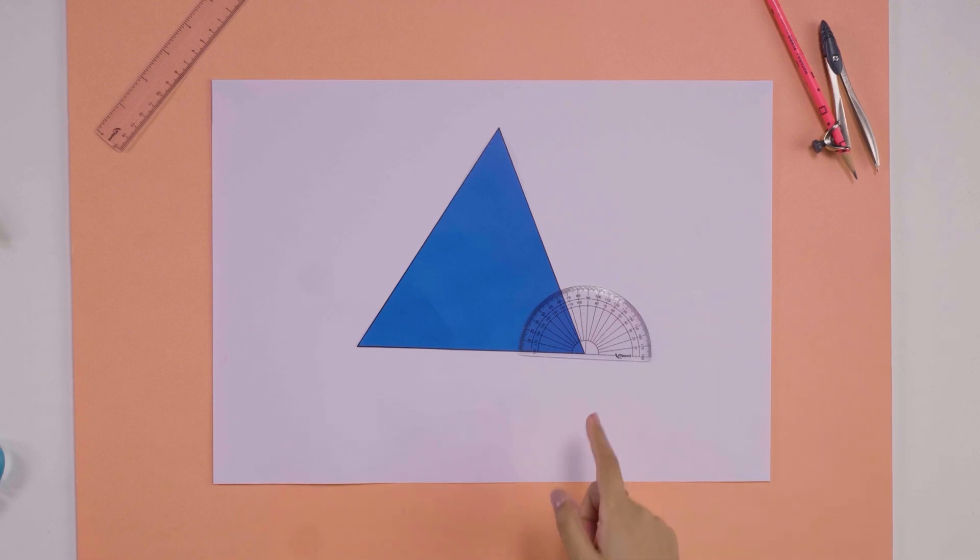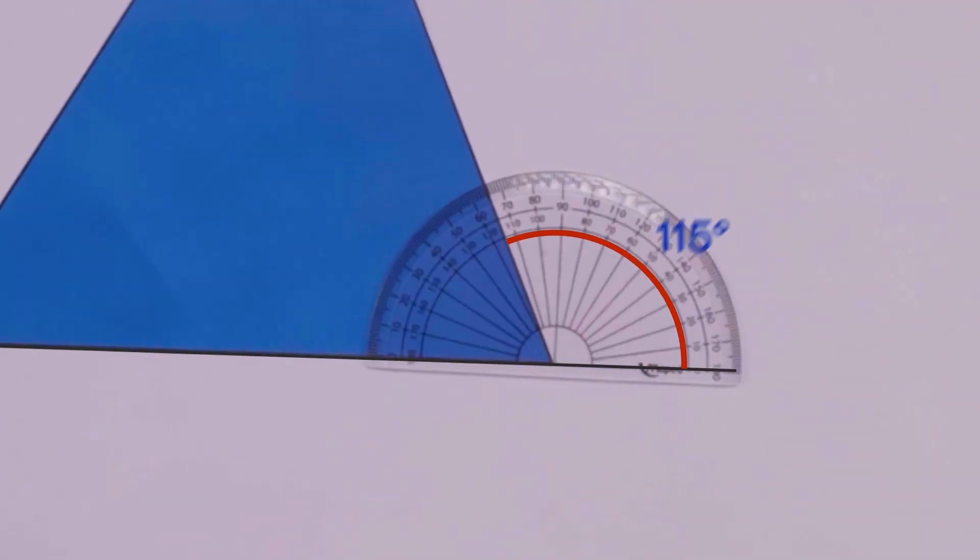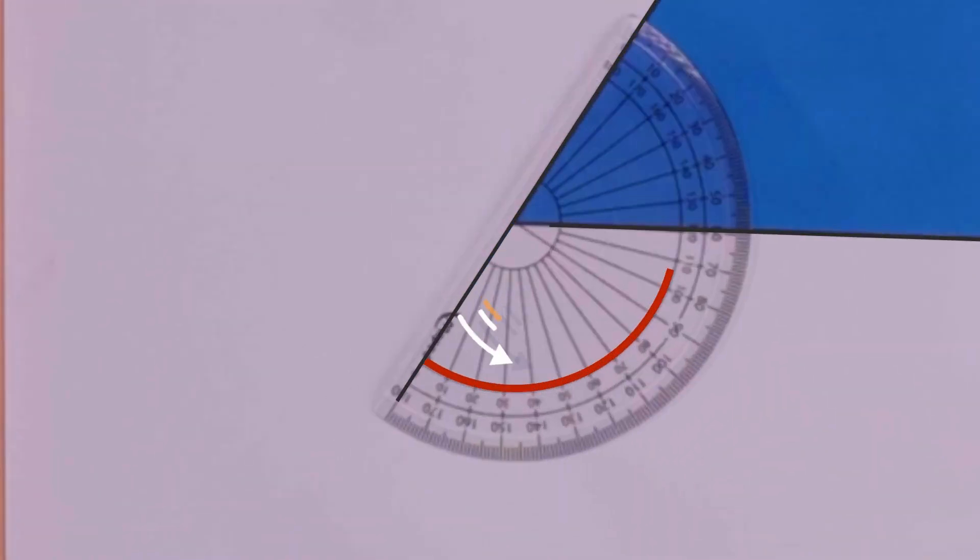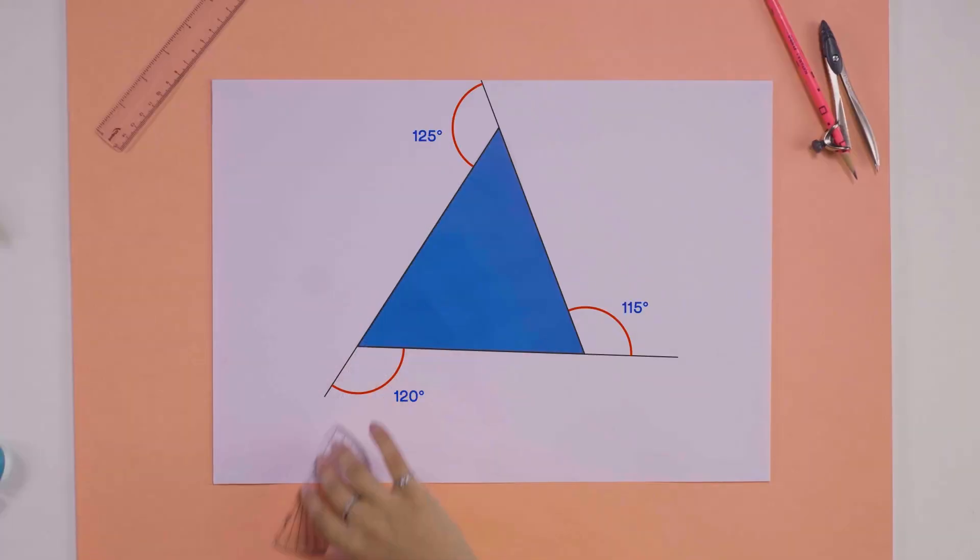Let's try measuring them. This one is 115 degrees. This 125 degrees. And this is 120 degrees. Adding them up, we get 360 degrees.